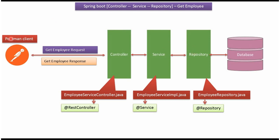Here you can see the Postman client which sends a get employee request to the controller layer. Then the request goes to the service layer, then to the repository layer, and the repository layer gets the employee record from the employee table in the database. Finally, the response goes back to the Postman client.